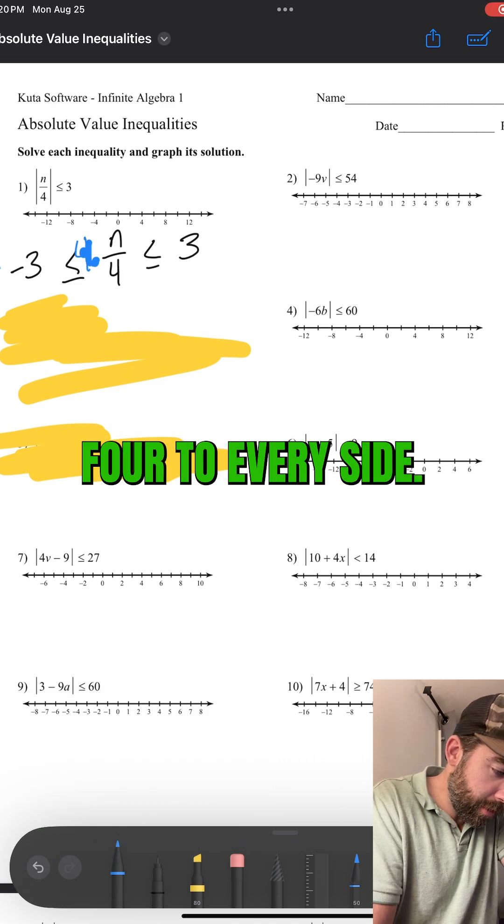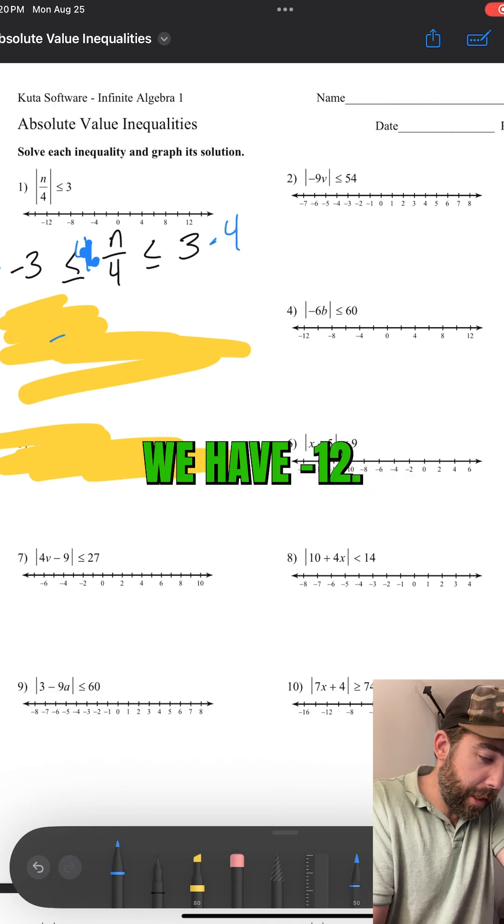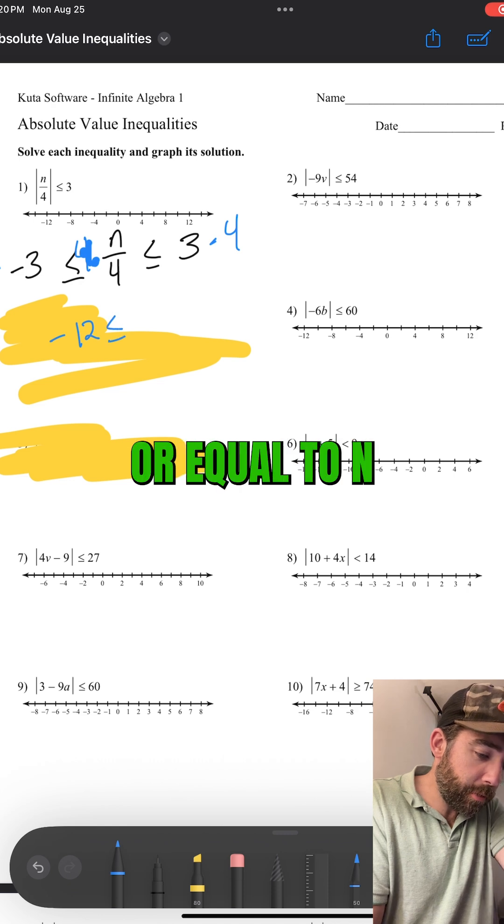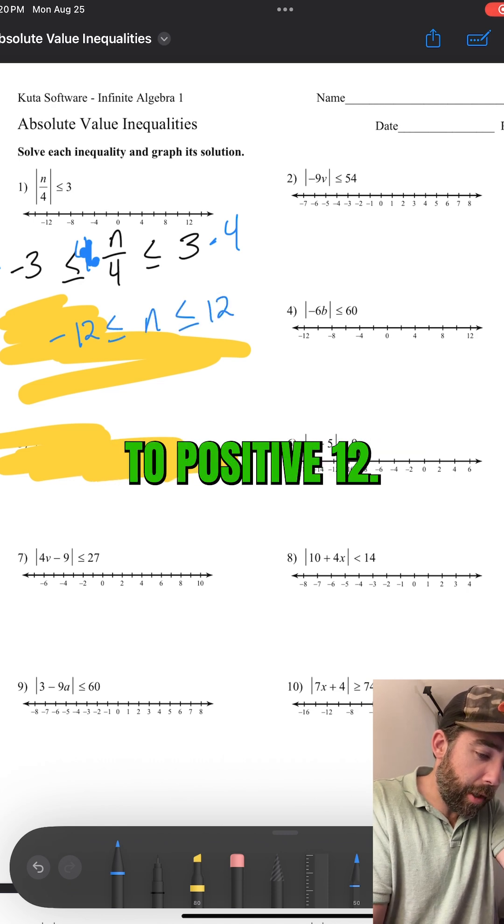Multiply by four to every side. Multiply by four. We have negative 12 less than or equal to n, less than or equal to positive 12.